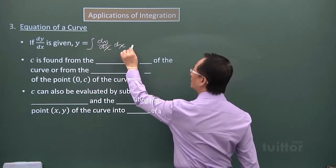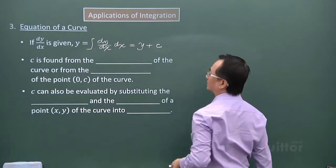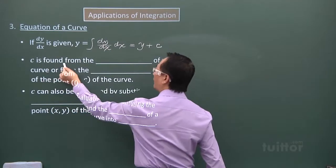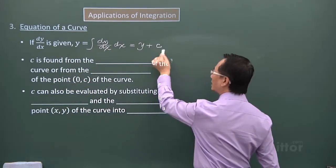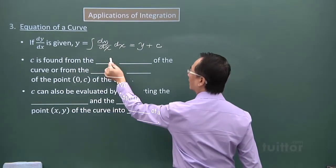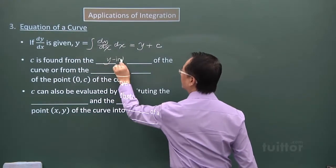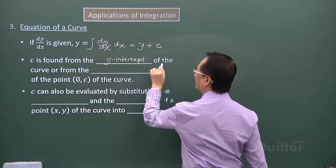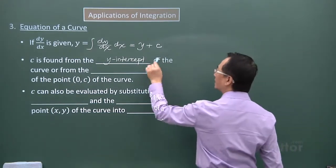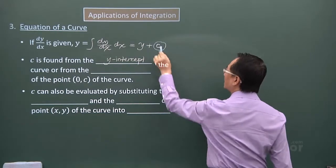Of course, when you do that, you will have y plus c. So c is found from the, we are referring to this c, from the y-intercept. This is the y-intercept of the curve. Let me just talk about this y-intercept. This is the y-intercept.